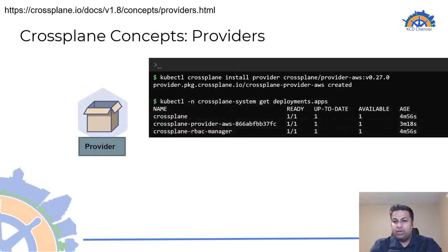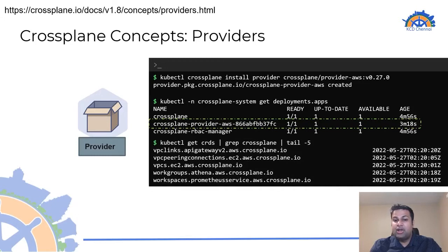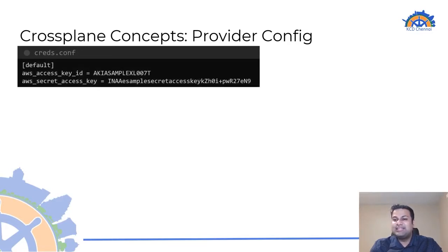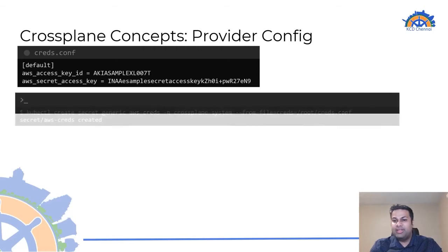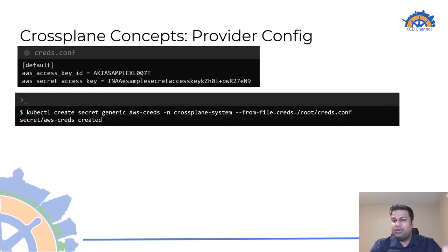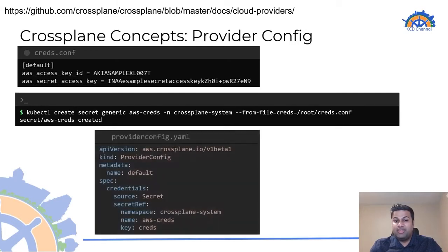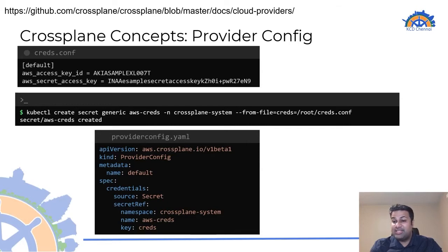Once the provider is installed, we can see the controller installed as a deployment in the Crossplane system namespace, and a bunch of CRDs installed on the cluster corresponding to managed resources in AWS. Now that the provider is installed, we need a way to authenticate to the platform. For AWS, this is done by creating an account key file containing the access key ID and the secret access key, then creating a Kubernetes secret in the Crossplane system namespace using that key file. Next, we create a ProviderConfig object to configure credentials for the AWS provider, which references the Kubernetes secret and facilitates authentication with the AWS account.